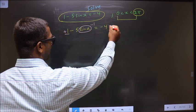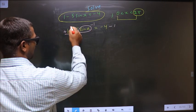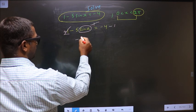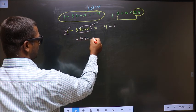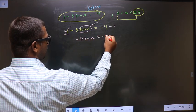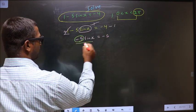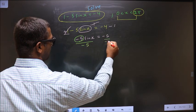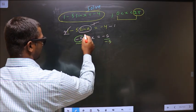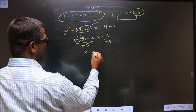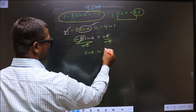To get rid of this plus 1, you subtract 1 on both sides, so we get minus 5 sin x equal to minus 5. Now to remove this minus 5, you divide by minus 5 on both sides. So we get sin x equal to 1.